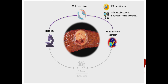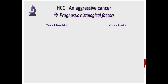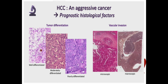For the first part of the talk, I would like to focus on two main clinical issues: classification of HCC and differential diagnosis of HCC. As introduction, I would like to remind you that hepatocellular carcinoma covers a wide spectrum of tumors, illustrating its high degree of tumor heterogeneity. According to the last WHO classification, eight different morphological subtypes of HCC are described. In addition to its great tumor heterogeneity, HCC is an aggressive cancer. Importantly, histology is able to provide significant prognostic features, such as tumor differentiation and presence of vascular invasion.